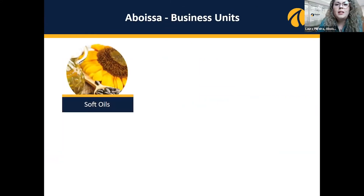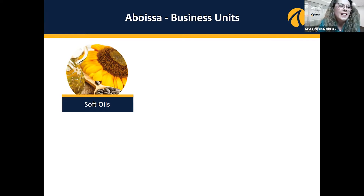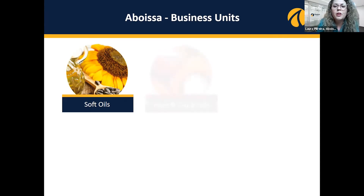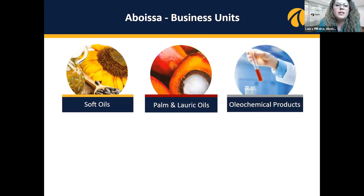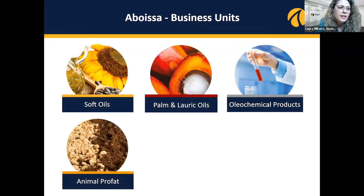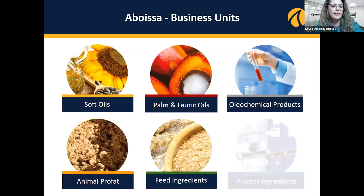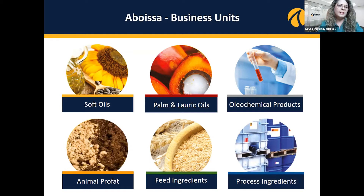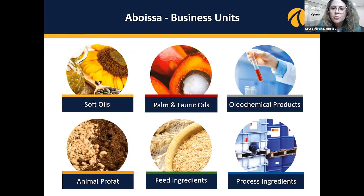Here are some of my business units. This is the soft oils business unit — it's my business unit where I'm working. It covers oils you can find in the supermarket such as corn oils, soybean oils, sunflower oil, palm and lauric oils, oleochemical products — the byproducts of the process — animal byproducts, feed ingredients, animal nutrition, and the processed ingredients that are the chemical material for processing.